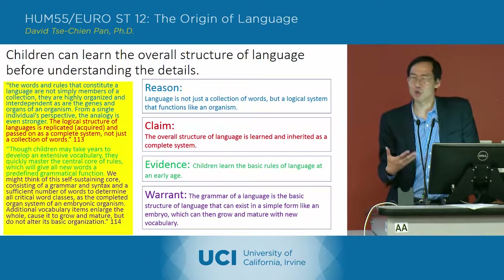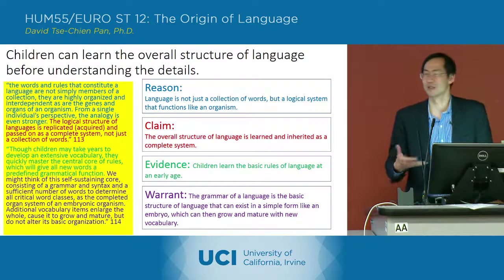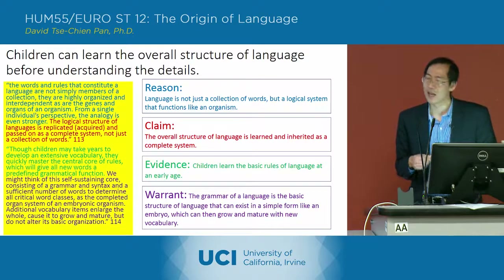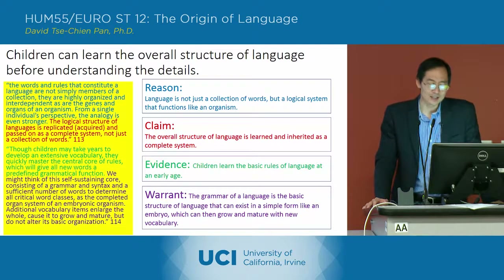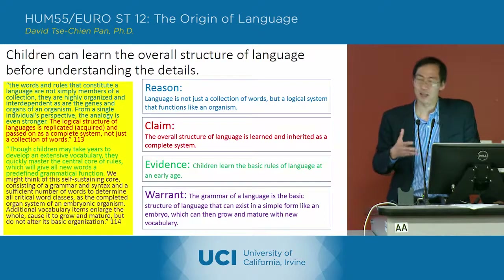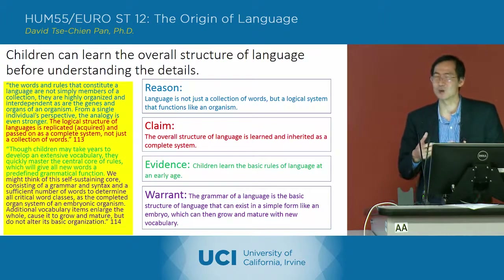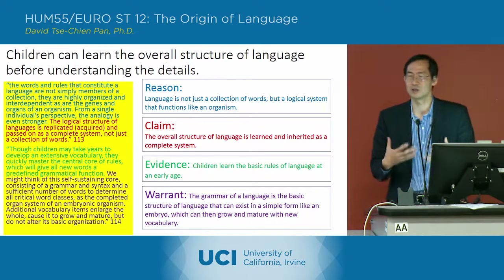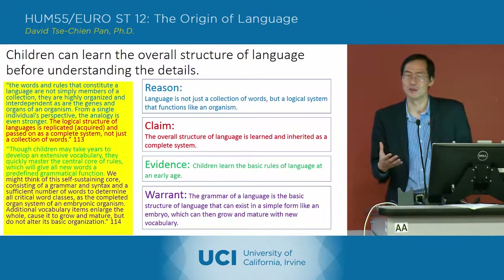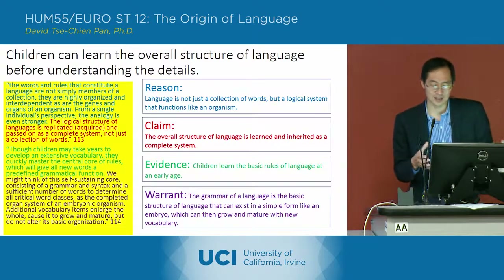Deacon explains the particular types of learning disabilities or learning limitations that children have and how those match the way language functions or needs to be learned. The first thing he indicates is that the overall structure of a language is learned as a complete system. He says language functions like an organism — just as an organism can begin in an embryonic stage that is still fully functioning in a sense, having all the basic structural pieces but not yet developed, a language also has the possibility of existing in a simple state that still functions.